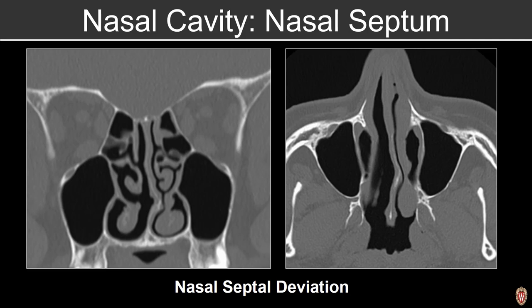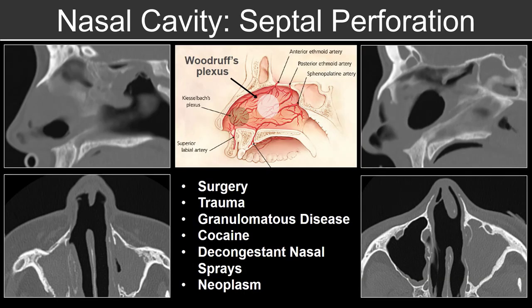We also want to evaluate for nasal septal deviation, which could potentially be a cause of decreased smell. We'll assess the degree of septal deviation from the midline and describe if there's evidence of a septal spur and whether it contacts the middle turbinate or nasal cavity wall. We'll also note perforations within the nasal septum, which can be post-surgical or related to granulomatous disease, inhalation, neoplasm, etc., and describe their location and size.